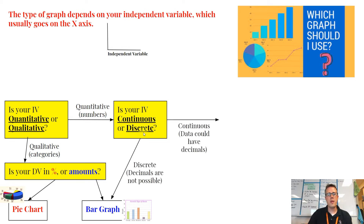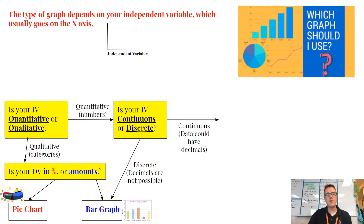Here's what those two words mean. Continuous is when you could have a decimal — something like 2.76. If your IV could be measured with a decimal, then it's called continuous. If it's discrete, that's when decimals aren't possible. For example, something discrete is like number of people — you would never have a decimal there. But if you were measuring amount of water, that's something that could have a decimal, so that would be continuous.